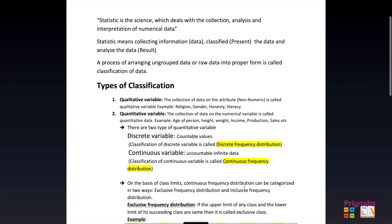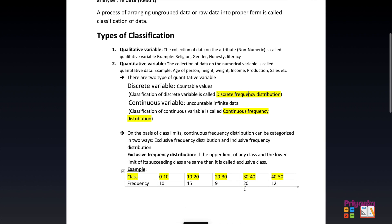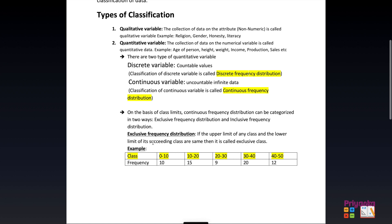On the basis of class limits, continuous frequency distribution can be categorized into two types: exclusive frequency distribution and inclusive frequency distribution. It is quite important to understand which one is exclusive and which one is inclusive.